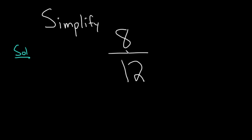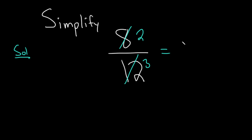But there's an easier way. 3 won't work. Look, 4 does work, and 4 is going to be the largest divisor of both of these. So 4 goes into 8 two times, and 4 goes into 12 three times. So we just get two-thirds.